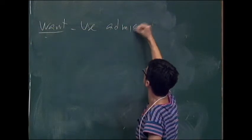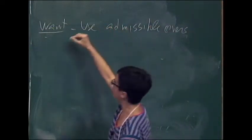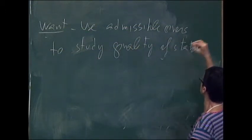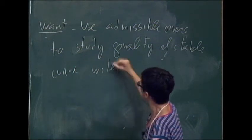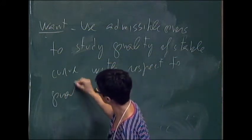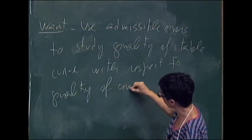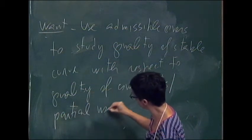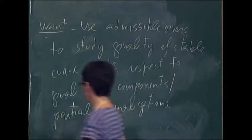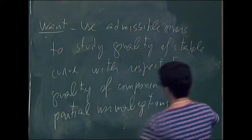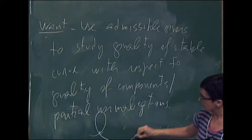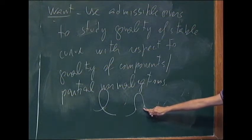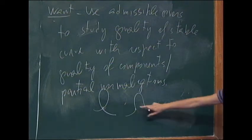We want to use those admissible covers to study the gonality of a stable curve with respect to the gonality of the components of the curve and also some partial normalizations. We are going to start by considering the partial normalization. The partial normalization breaks a node, so what we are going to do is the opposite: start with a curve that has some admissible cover and try to construct one for the curve where we glue two nodes. This will be the first two of our three constructions.